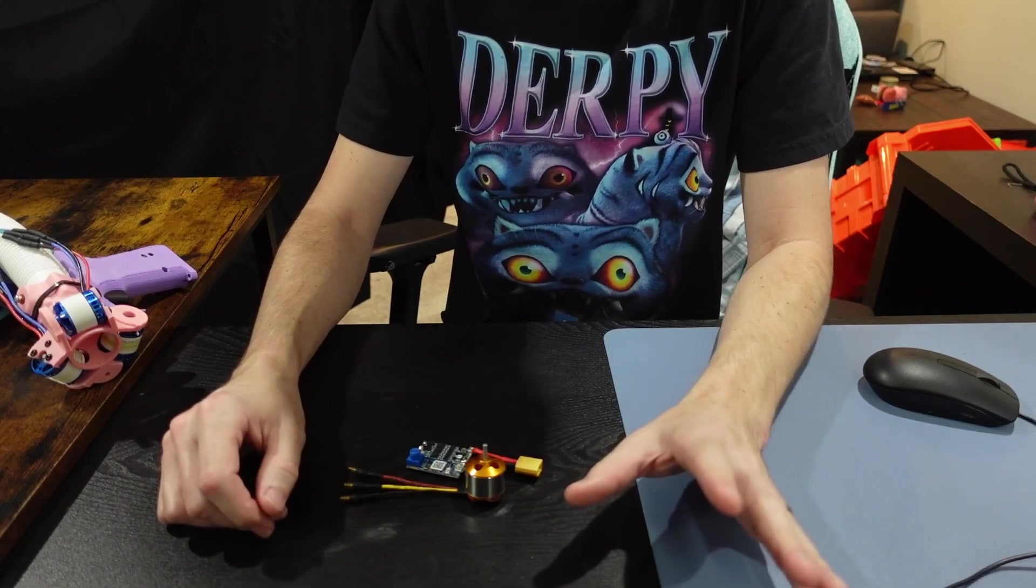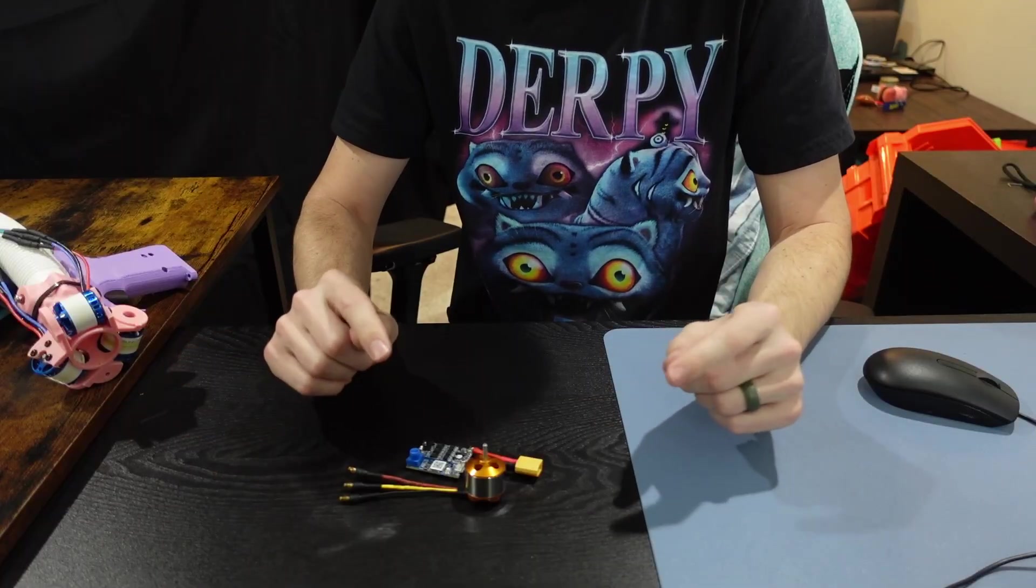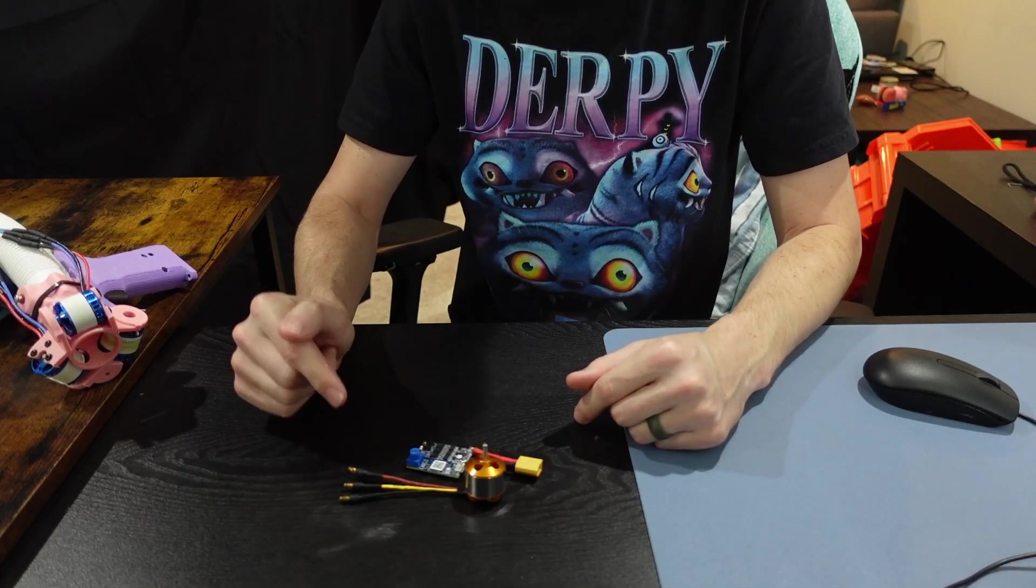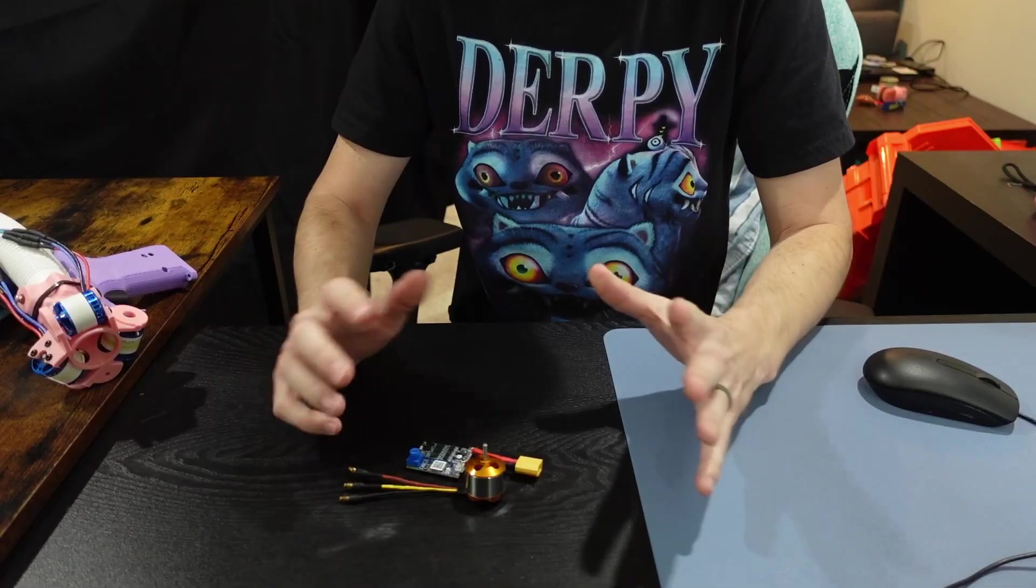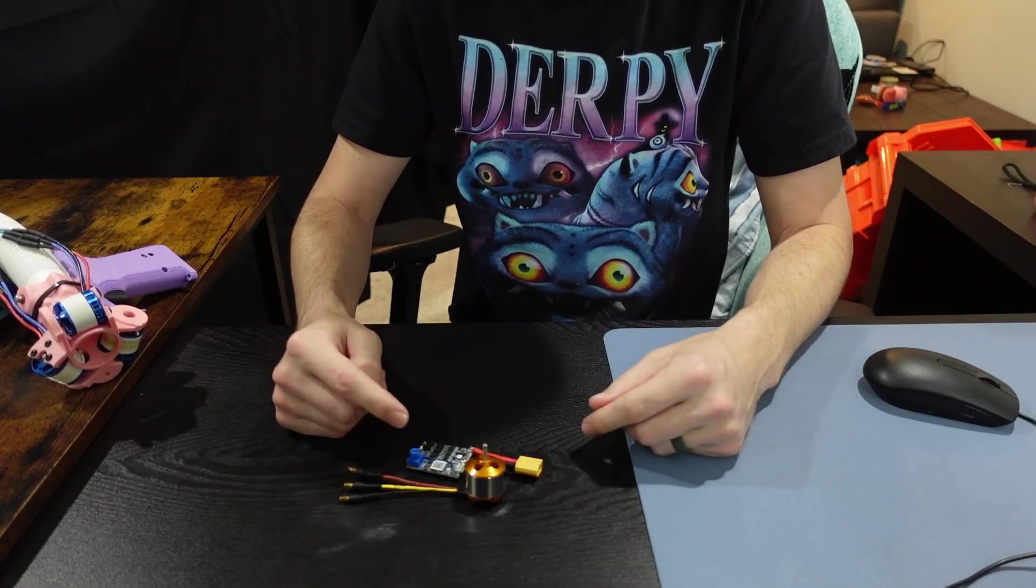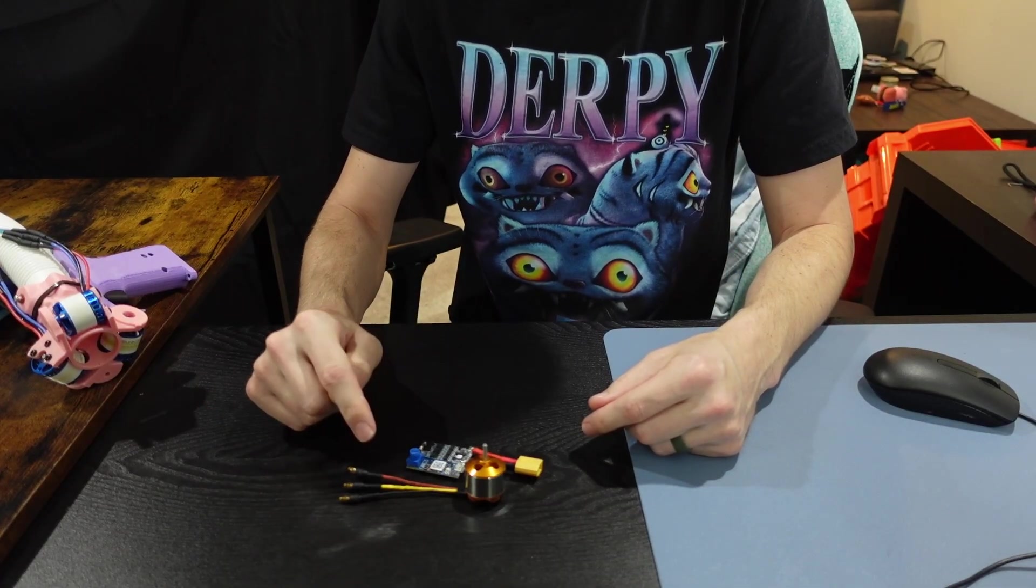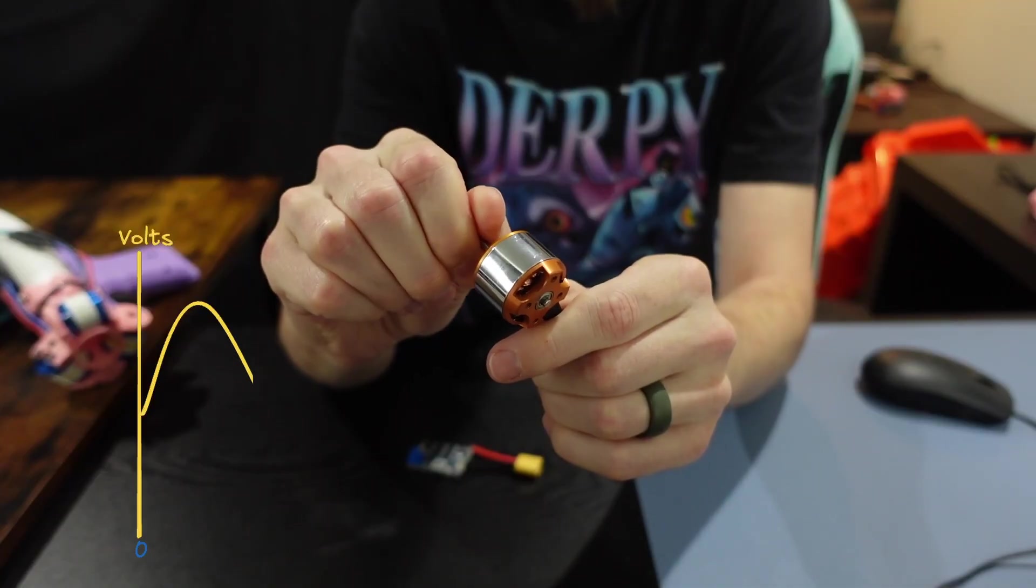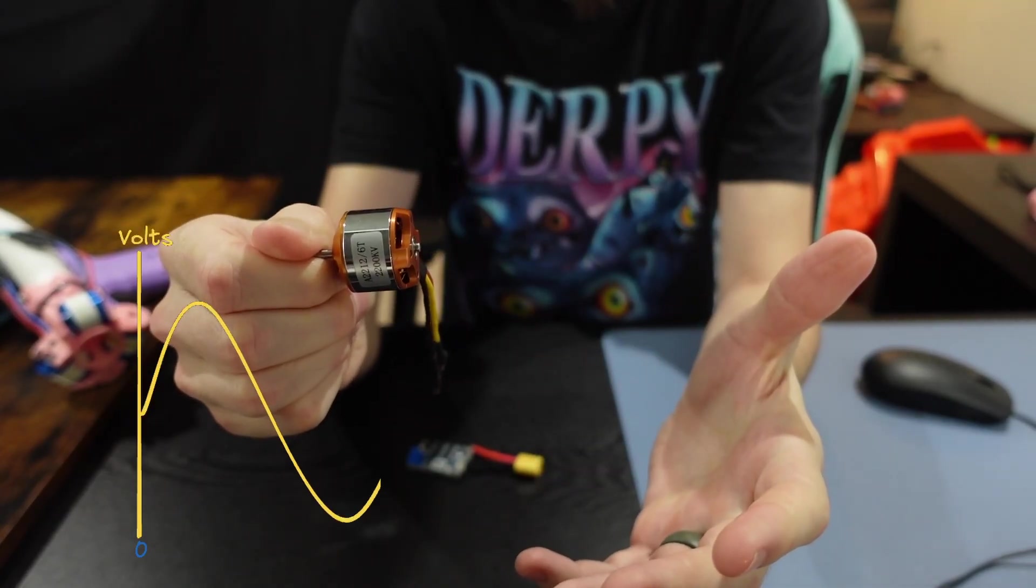Tangent max here. I wanted to point out that we're measuring the back EMF voltage to determine the rotor's angle. Back EMF is the product of moving a coil through a magnetic field. If we plot the voltage while we turn the motor, it should look like a sine wave.